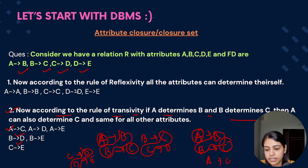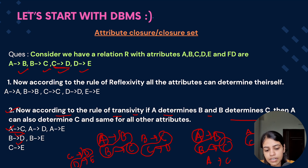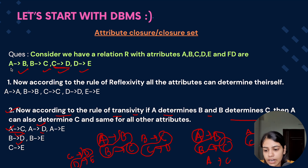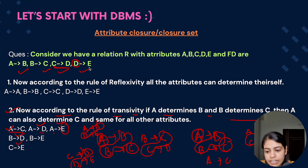We have three new functional dependencies. Continuing: A determines C and C determines D, so A determines D. Then A determines D and D determines E, so A determines E. Since E doesn't determine any attributes, these are all the derived dependencies for A. Coming to B: B determines D, and D determines E, so B determines E. E determines nothing, so those are all of B's derived dependencies.